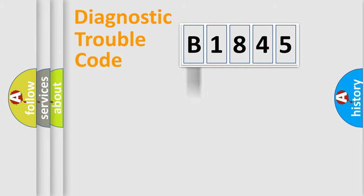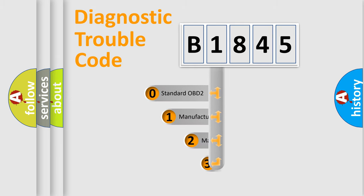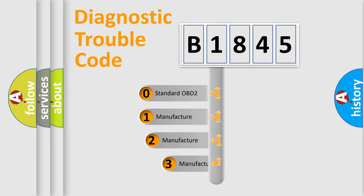The four units are: Powertrain, Body, Chassis, and Network. This distribution is defined in the first character of the code.